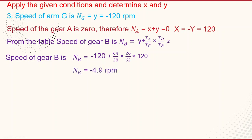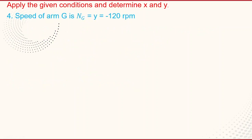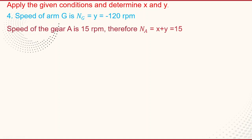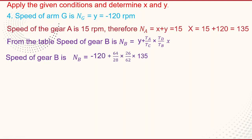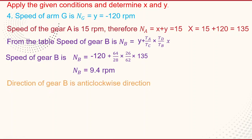Substituting all data, the speed of gear wheel B is minus 4.9 RPM. Minus means it is in the clockwise direction, so the direction of gear B is clockwise. For the fourth case: speed of arm G is minus 110 RPM, so Y equals minus 110, and wheel A makes 15 RPM counterclockwise, so NA equals X plus Y equals 15, giving X equals 15 minus Y equals 15 plus 110 equals 135. Using NB equals Y plus TA/TC times TD/TB times X, substituting all data gives the speed of gear wheel B as 9.4 RPM — positive means counterclockwise direction.